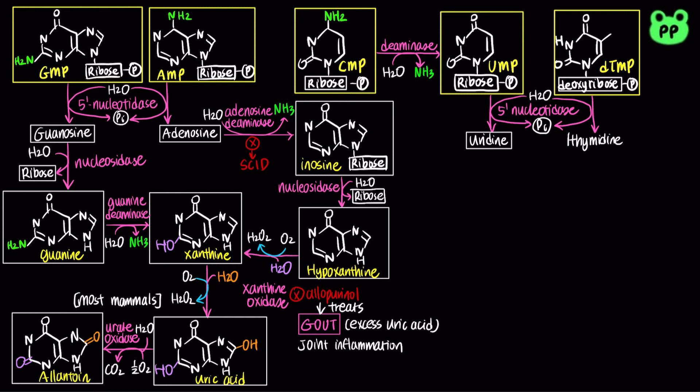Nucleosidase then hydrolyzes the sugar group from the nucleosides, releasing ribose from uridine to produce uracil, and deoxyribose from thymidine to produce thymine.